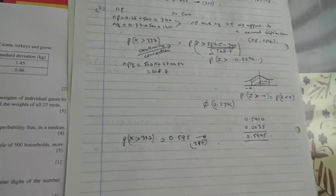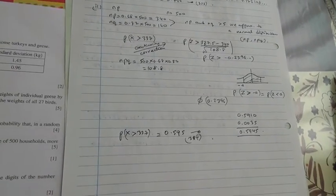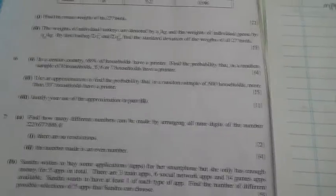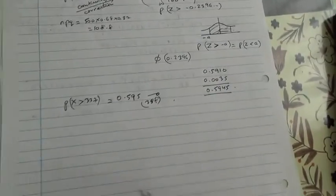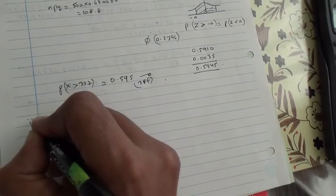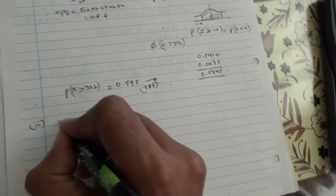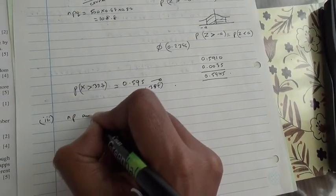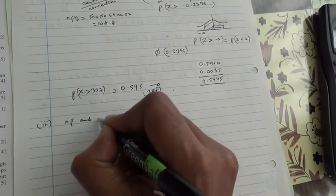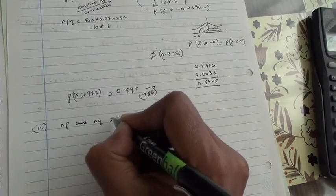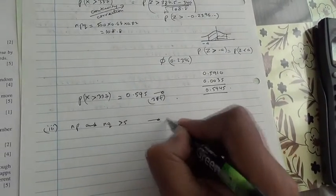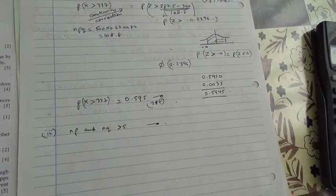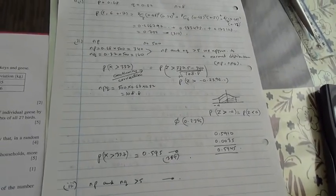For the last part — justifying the use of the approximation, worth one mark — we say: because NP and NQ are both greater than 5, that is sufficient justification to use the normal approximation. I hope that helps. Thank you.